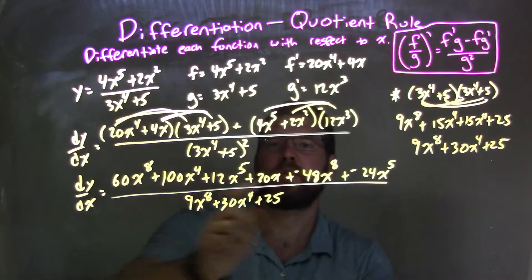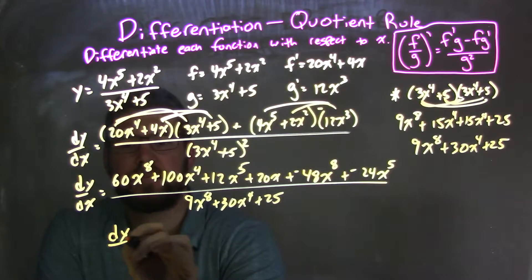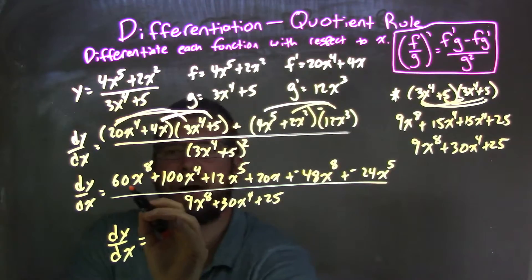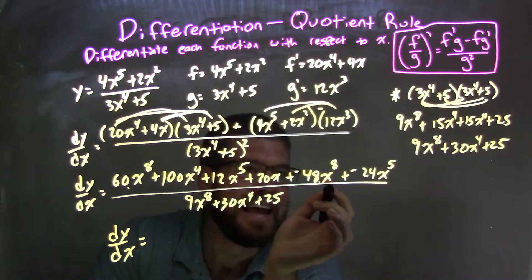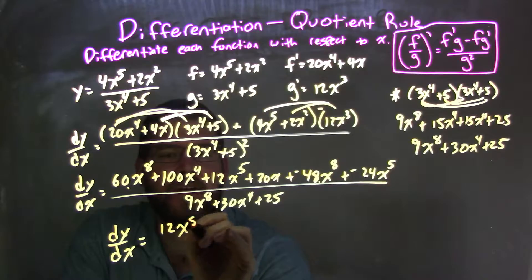So now let's go simplify. Let's find my like terms and combine them. So you have dy dx equals the highest degree I see is the eighth power. So I'm going to combine these two together. 60 minus 48 is 12. So we have 12x to the eighth power.